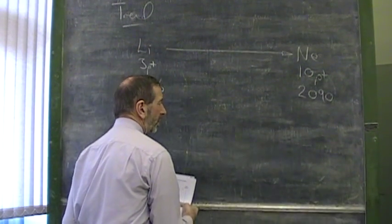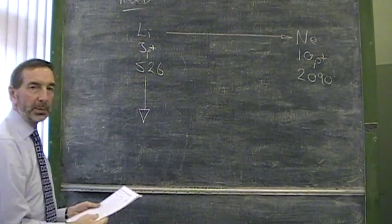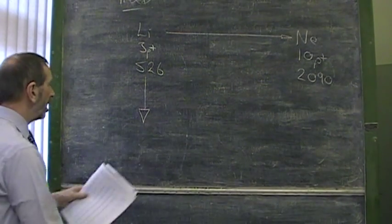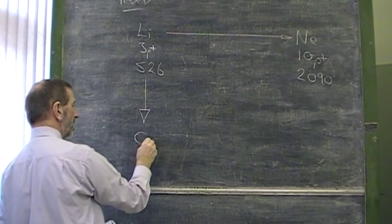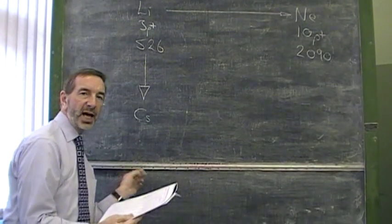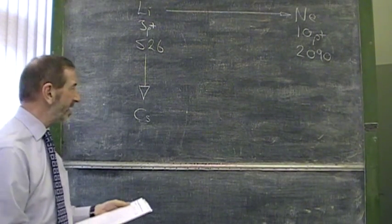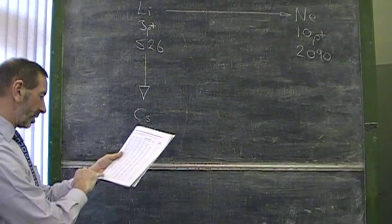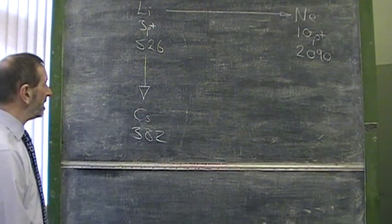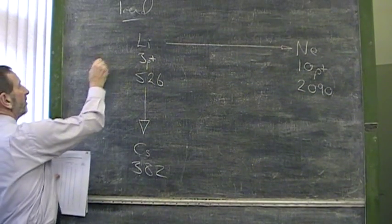Again, if we were to inquire as to the trend down a group in the table, what would we find? If you didn't know, you could always check the data book. If we go down group one, as far as, say, cesium, we'll find that the ionization energy is decreasing. It's becoming easier to remove an electron. It requires less energy. The data book says that for cesium, the value is down to 382. Why should that be? Why is it taking less energy?